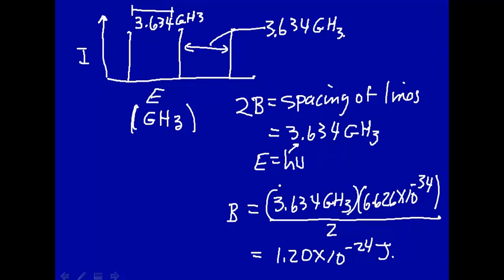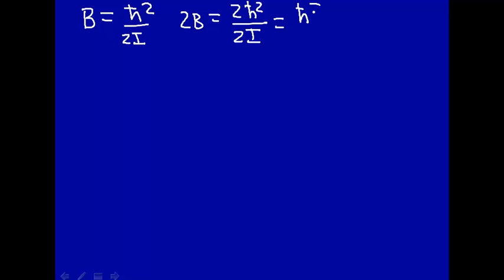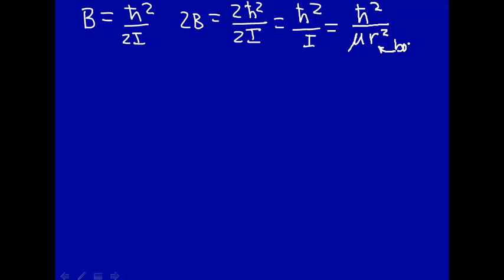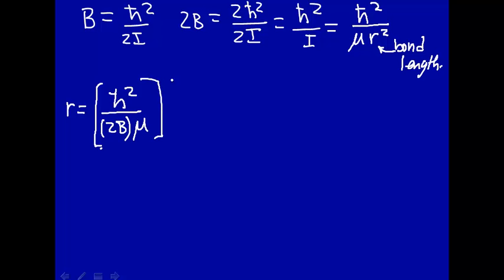Now let's see if we can determine what the bond length is from this data. Recall that the spectroscopic constant B was defined as h-bar squared over 2I, so 2B equals h-bar squared over I, and I equals mu r-squared, so this is h-bar squared over mu times r-squared, where r is the bond length. If we solve this equation for r, we have r equal to the square root of h-bar squared over 2B times mu raised to the 1-half power.